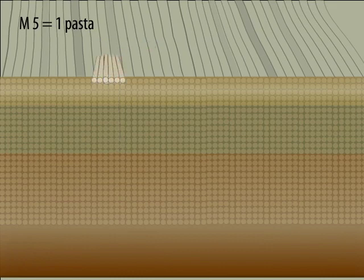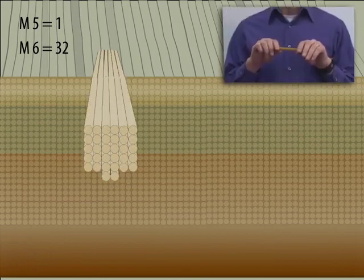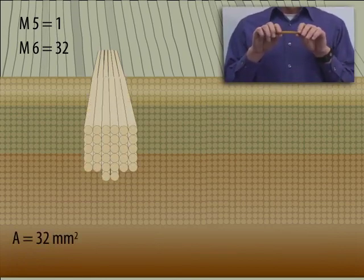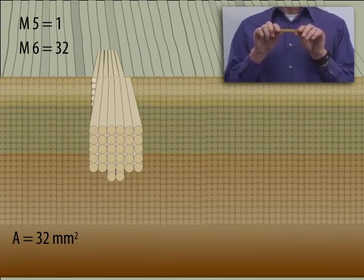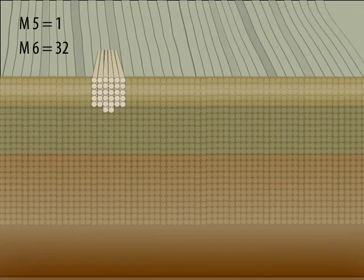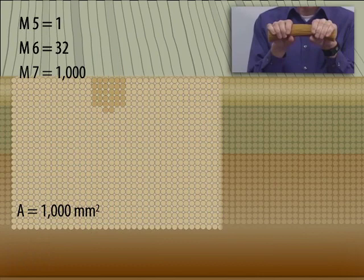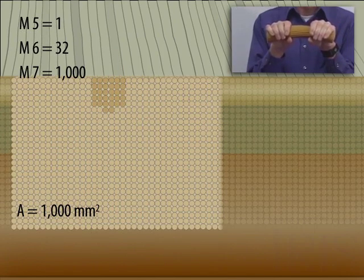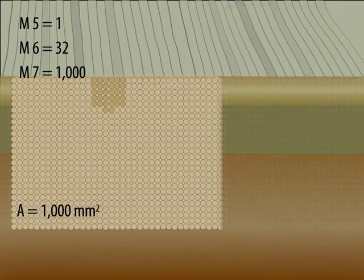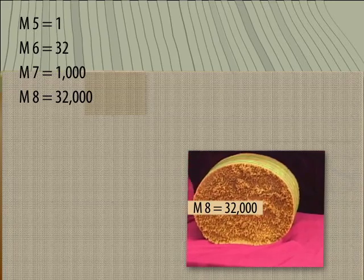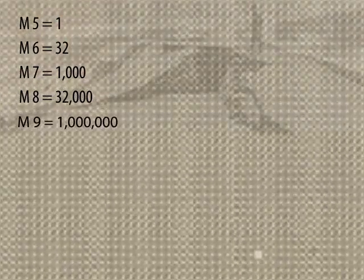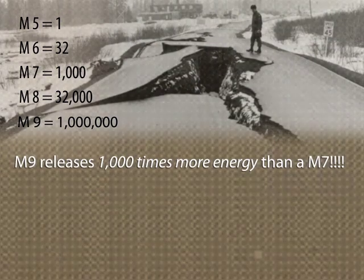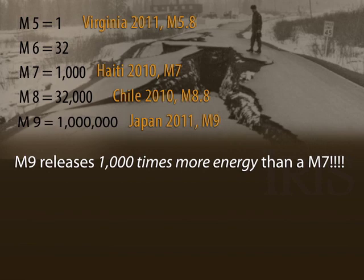To increase it to a moment magnitude of 6, we multiply by 32 — the surface area is 32 times higher, yet the amplitude is just 10 times higher. To reach a magnitude 7, you have to multiply 32 times 32 and you get roughly 1,000 strands, or about a pound of spaghetti noodles. To get a magnitude 8, you need 32,000 pieces of spaghetti. A magnitude 9, on the other hand, would require a million pieces of spaghetti. A magnitude 9 releases 1,000 times more energy than a magnitude 7 earthquake.